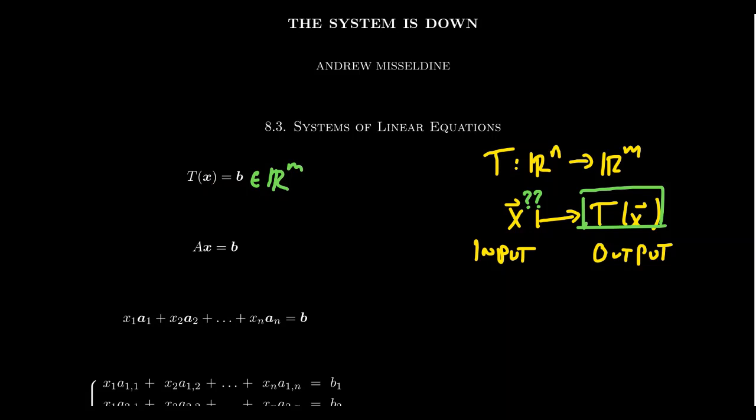Now if T is a linear transformation, then we know that it can be represented by matrix multiplication. So we're trying to solve this equation T of x equals b, but that's equivalent to trying to solve the matrix equation Ax equals b. Is there some vector x which if multiplied by A gives you b? So in some essence, we're trying to factor the vector b using a fixed matrix A.